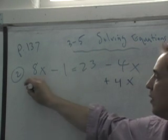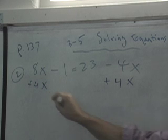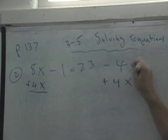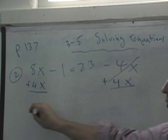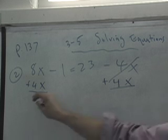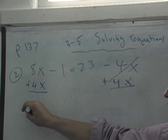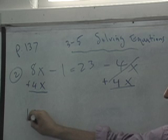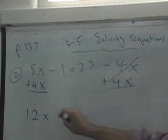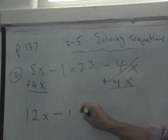Everybody write that down, plus 4x. And we get what? 8x plus 4x equals what? This cancels, right? What is it, Catriona? 8x plus 4x? 12x. That's what I thought you said. So we rewrite this: 12x minus 1 equals 23.